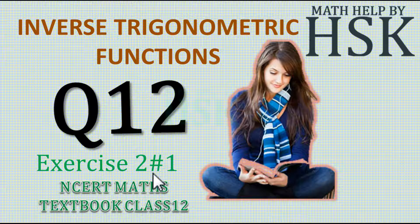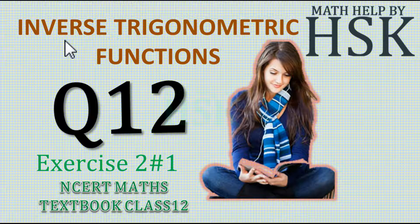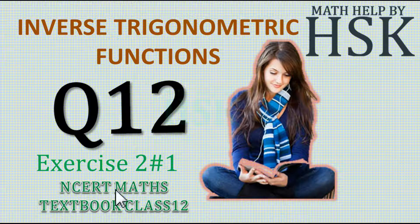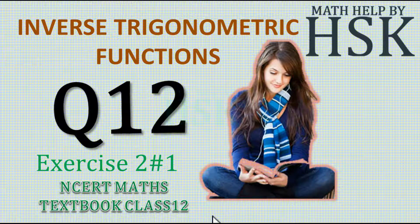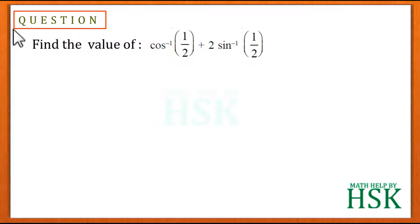Taking question number 12 of exercise 2.1 of the chapter Inverse Trigonometric Functions from NCERT Maths textbook class 12. In this question we have to find the value of cos⁻¹(1/2) + 2sin⁻¹(1/2).